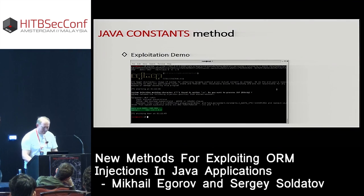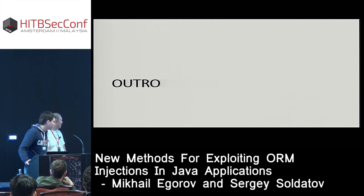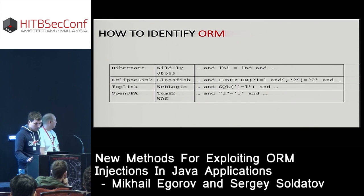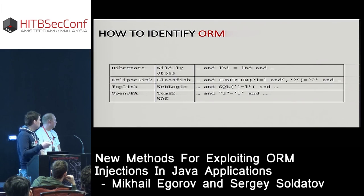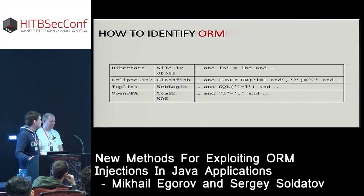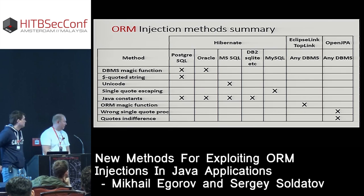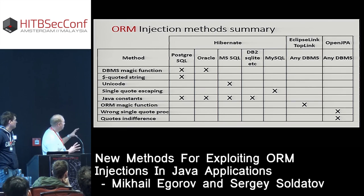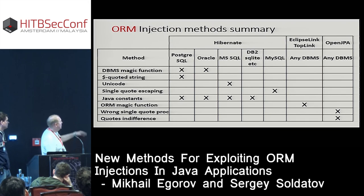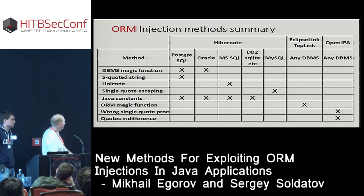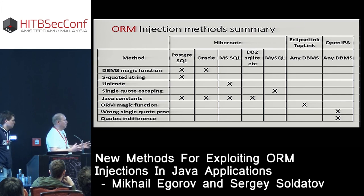Here is the final part of our presentation. When you've found an ORM injection, before exploiting it you need to know which ORM library you're targeting. You can use the following table: paste different payloads into the vulnerable parameter and see which payloads return a valid response from the application. The final slide gathers together all the methods we presented and shows which method works for each ORM/database combination. We hope this table will be useful for you.